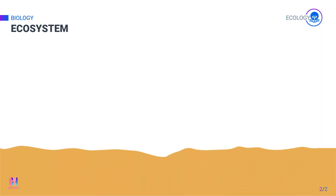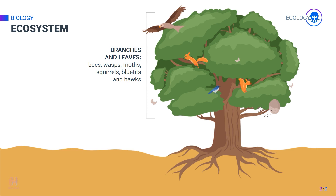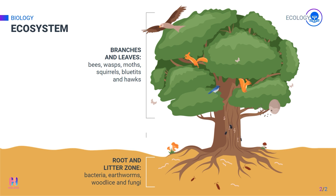The ecosystem can be as small as a tree. For example, this is where various organisms such as birds, insects, and squirrels live. Various microbes live near the roots of the tree too. So here, we have populations of birds, insects, squirrels, microbes, and a tree that forms a community, while the non-living factors include sunlight, water, and air. This is why a single tree can be considered an ecosystem.